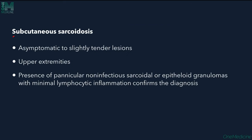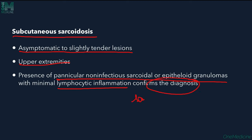Subcutaneous sarcoidosis presents as asymptomatic to slightly tender lesions, mostly on the upper extremities. The presence of panicular non-infectious sarcoidal epitheloid granulomas — epitheloid cells in subcutaneous tissue with minimal lymphocytic infiltrate — confirms the diagnosis of sarcoidosis.